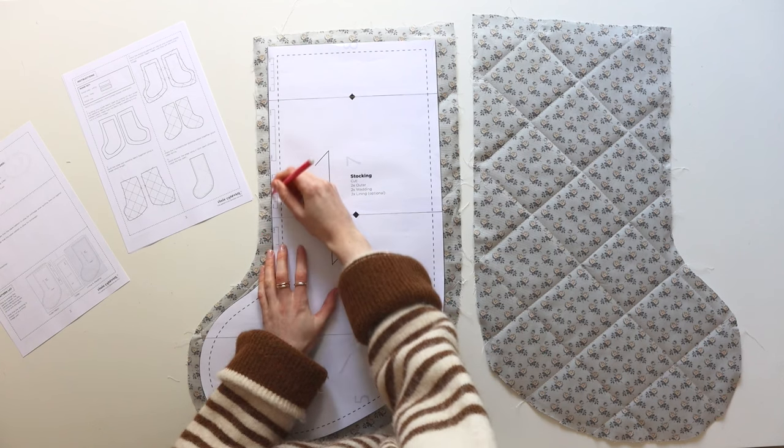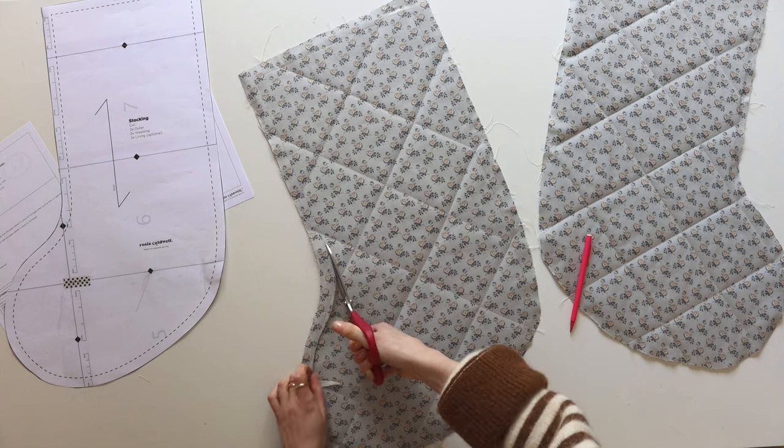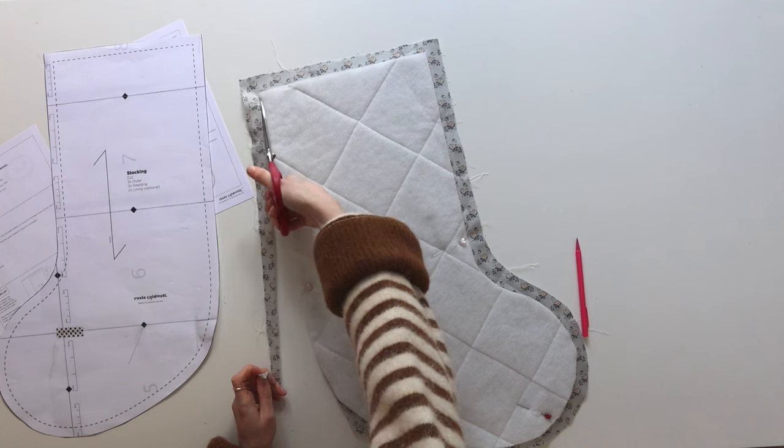Then you're going to want to put the stocking pattern back on top and trace around it. This will just give you a really nice clean edge and make sure all of the stitching is caught in the seams.